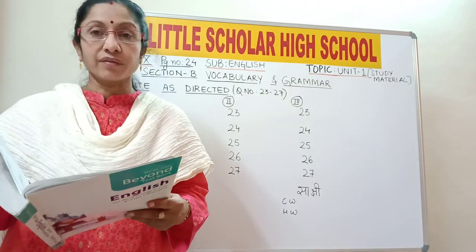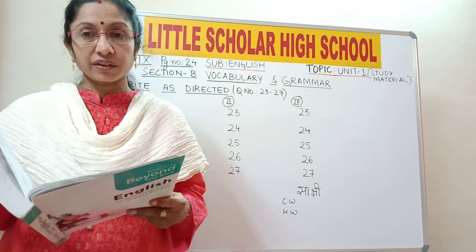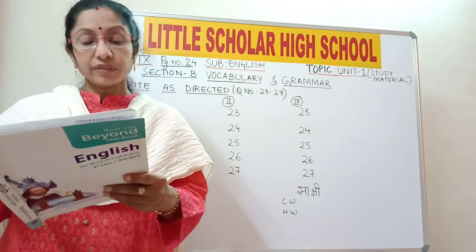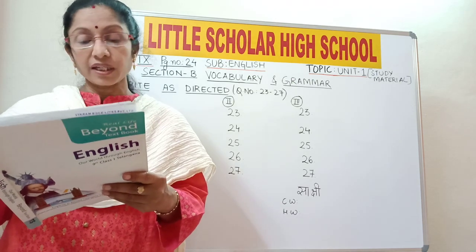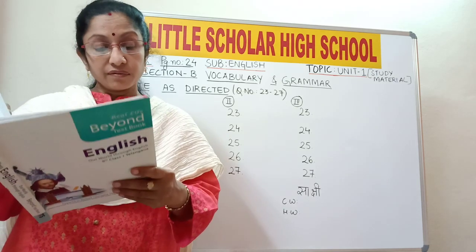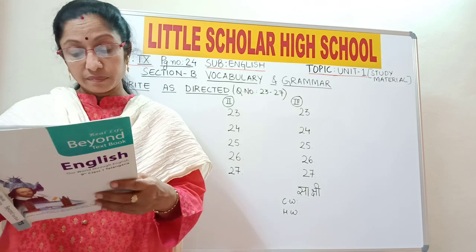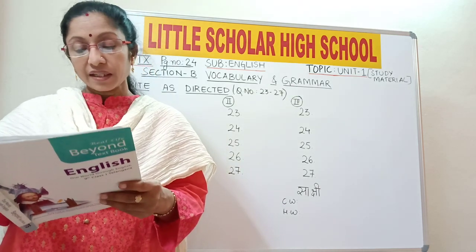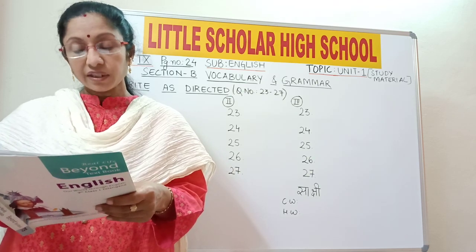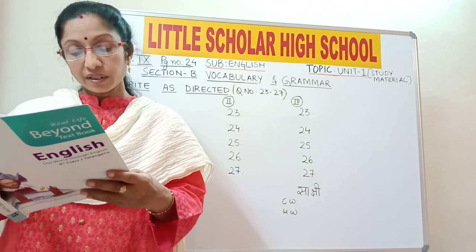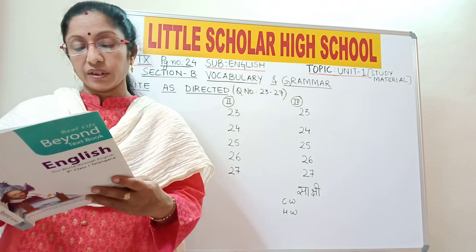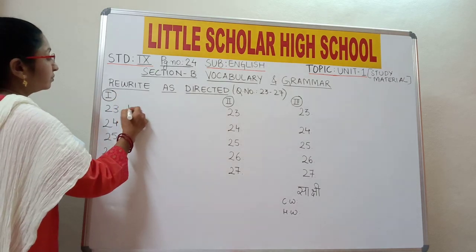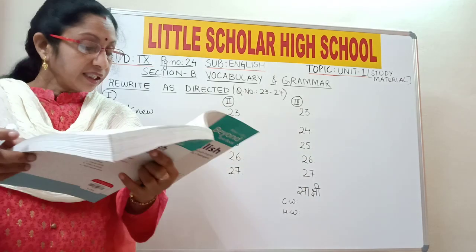The next section is rewrite as directed, question numbers 23 to 27. Each question carries 2 and a half marks. Some words in the given passage are underlined; rewrite the underlined words as per the directions given. For question 23, the word 'know' is underlined in 'Bobby know even if it was true.' Write the correct form — it should be 'Bobby knew,' the past tense of know. For question 24, write the word opposite in meaning to 'true' — opposite of true is 'false.'